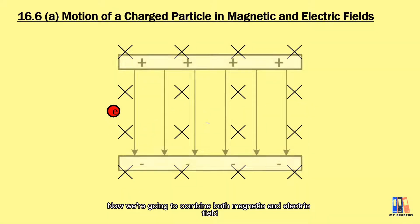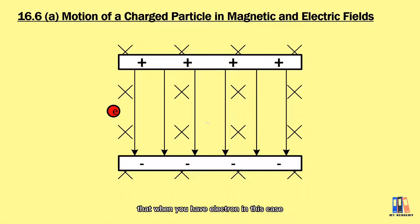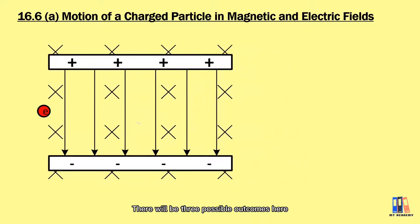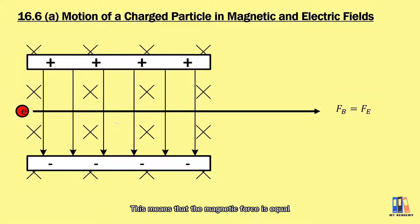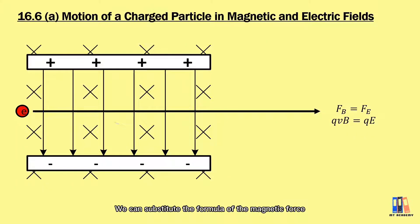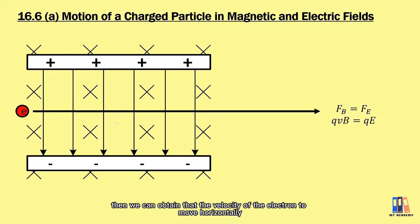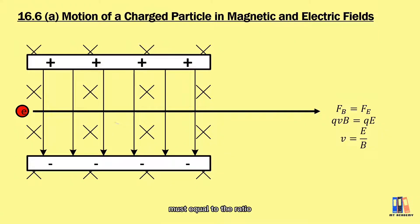Now we're going to combine both magnetic and electric fields when we have electrons. There will be three possible outcomes. First, the electron will move in horizontal motion, meaning the vertical resultant force is equal to zero. This means the magnetic force equals the electrostatic force. Substituting the formulas — qvB equal to qE — we obtain that the velocity of the electron moving horizontally must equal the ratio of the electric field strength to the magnetic field strength.